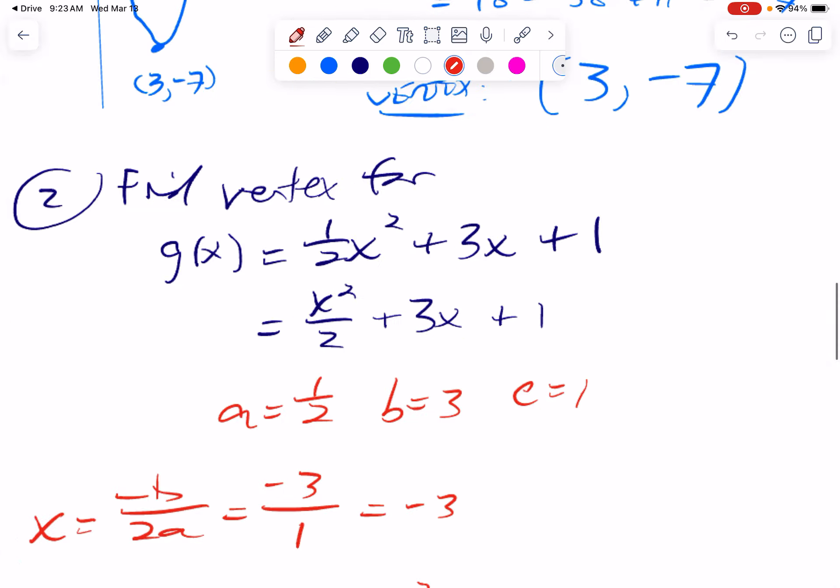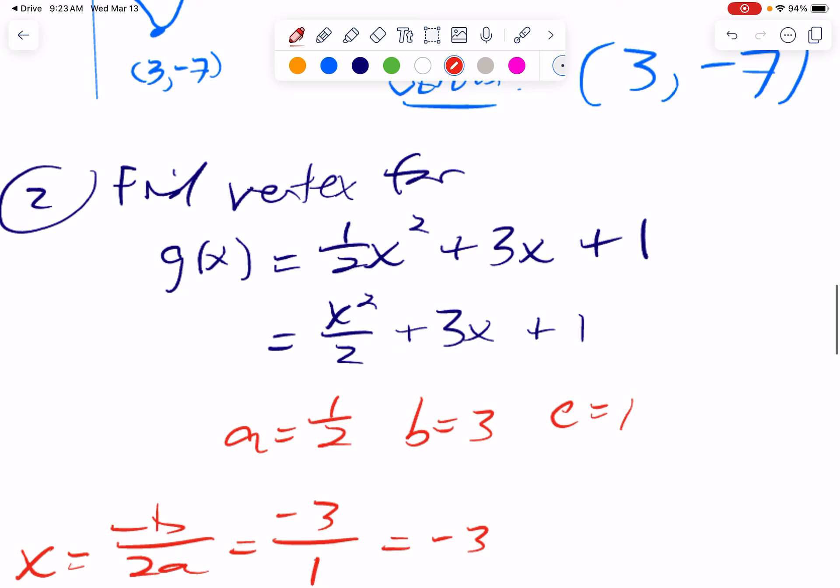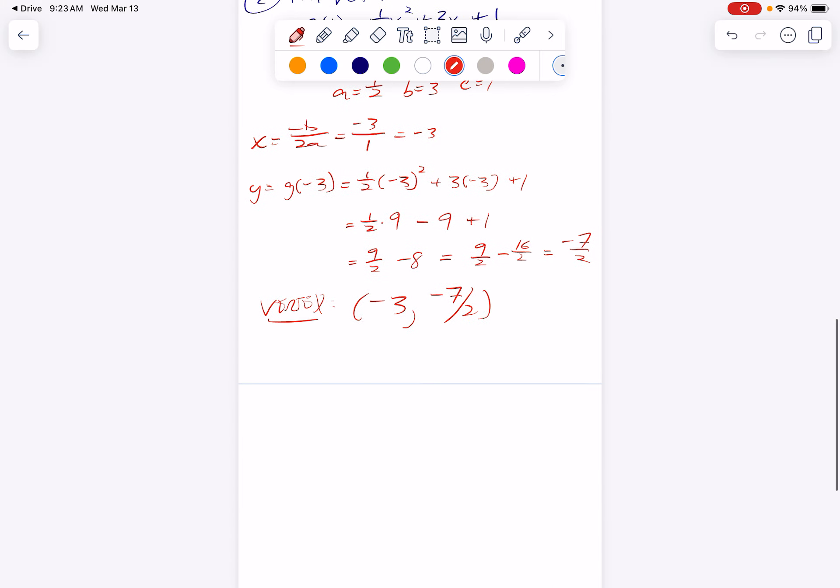So the vertex would have an x coordinate of negative 3 and a y coordinate of negative 7 halves. This one opens upward, but is kind of wide. So if we wanted to graph this, x coordinate of the vertex is at negative 3, y coordinate is at negative 3 and a half. So the vertex is around here, and it's one that's not particularly steep. It's kind of on the wide side.